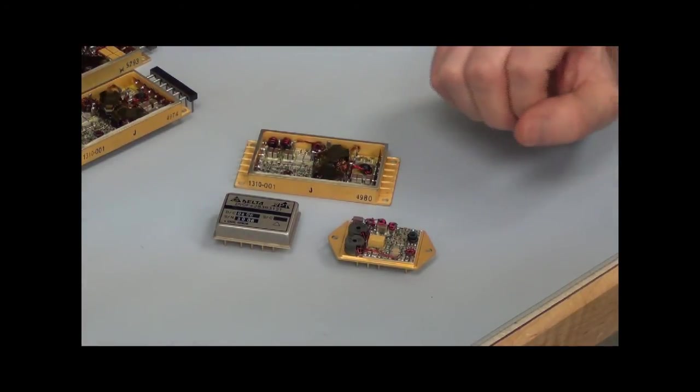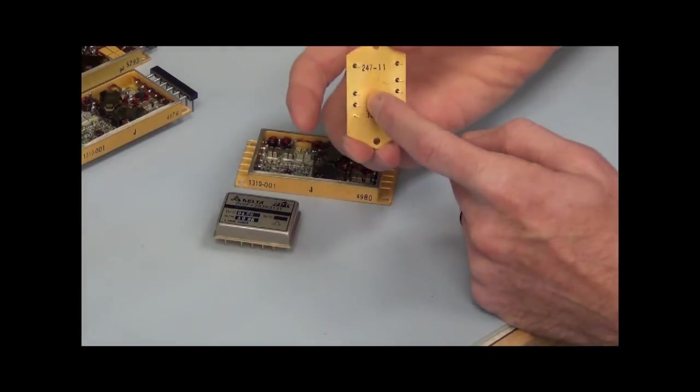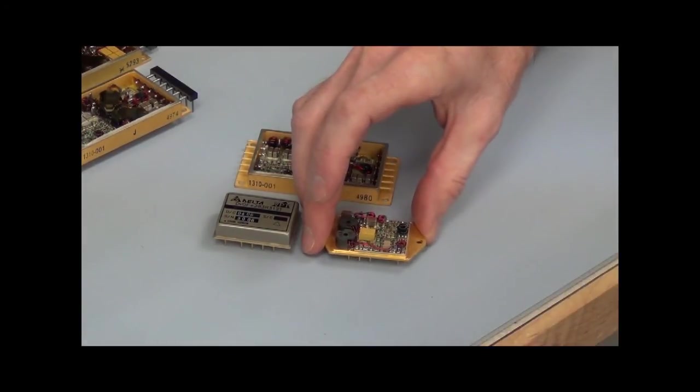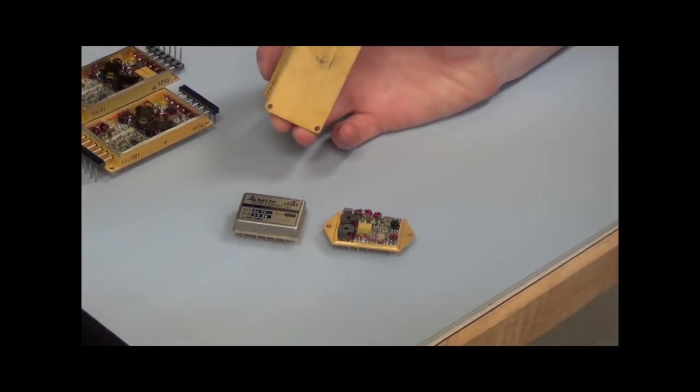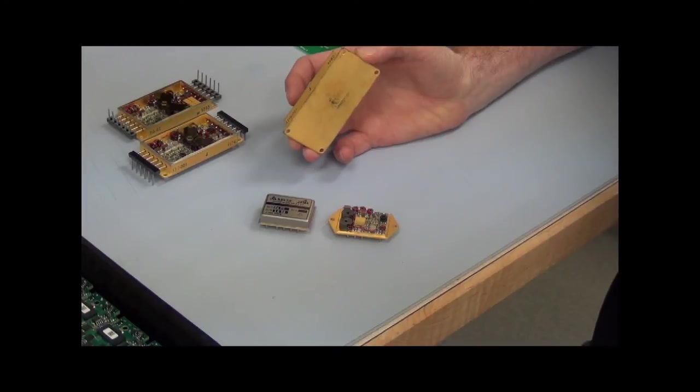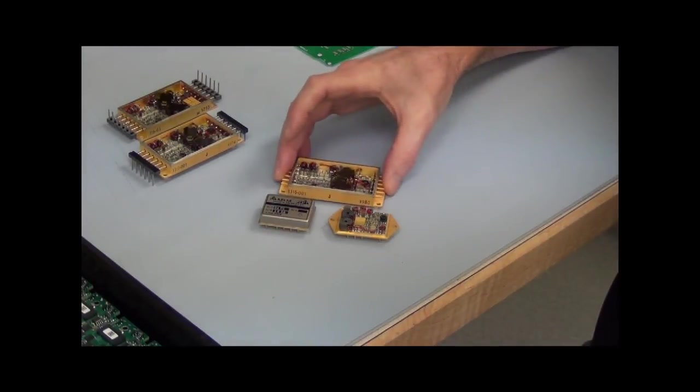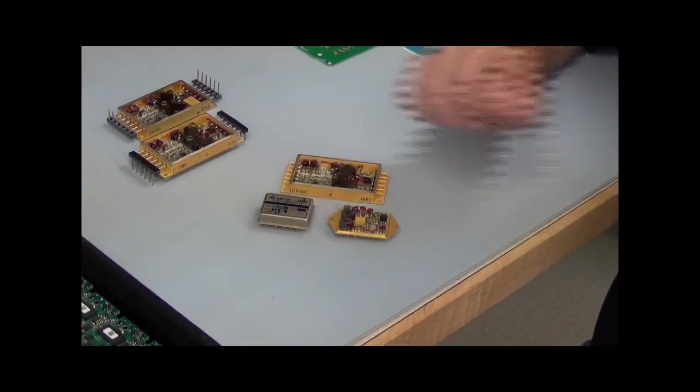It's important to note that the thermal path in each package is through the bottom of the package. So the bottom or the base plate needs to be maintained at 125 degrees C or below. There is little or no thermal path through the lid of the package.